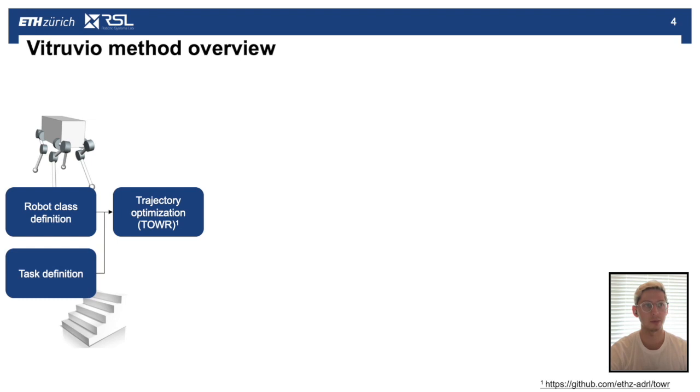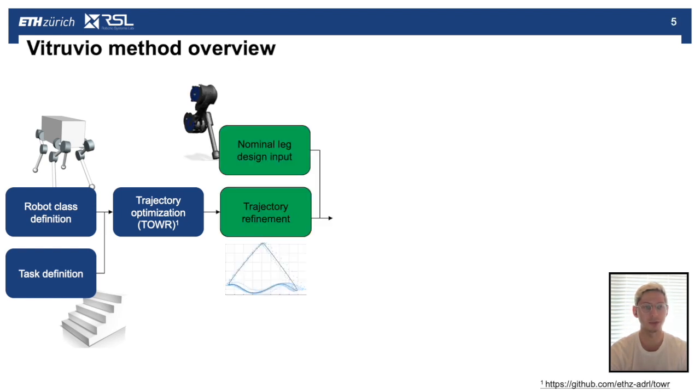I'll start with walking you through the method overview for the toolbox. Starting at the left with the boxes in blue, this is the trajectory generation stage of the toolbox. We start by defining a robot class and task which we use with the trajectory optimization framework TOWR, which is an open source framework to generate trajectories.